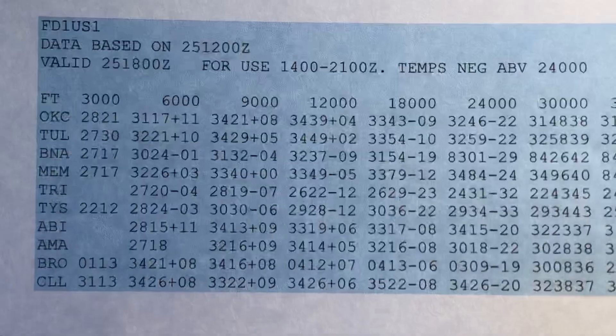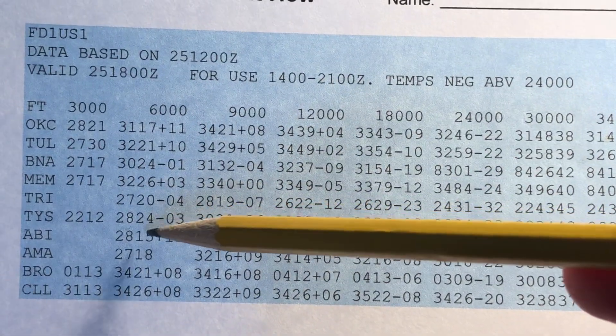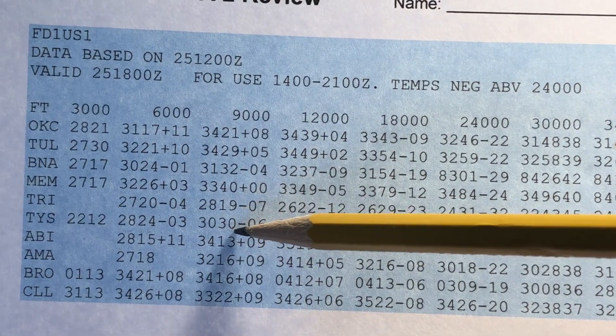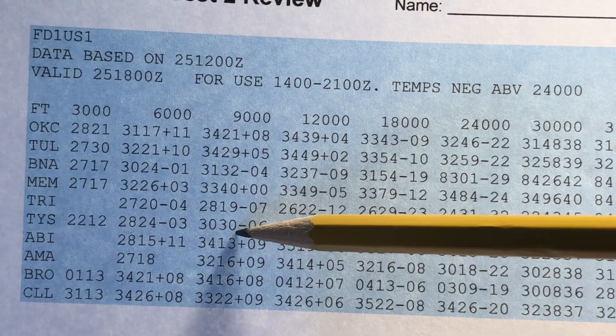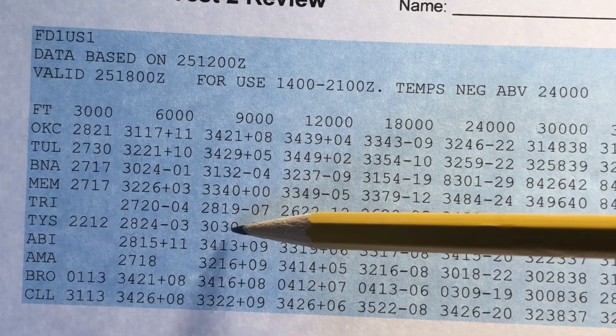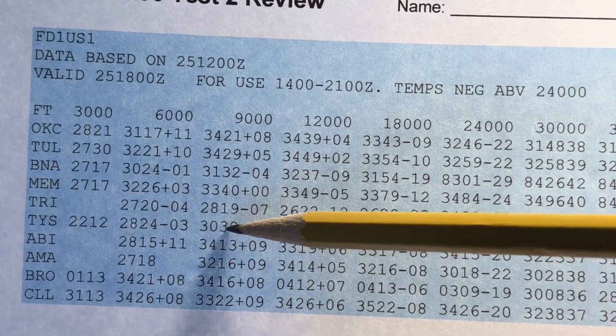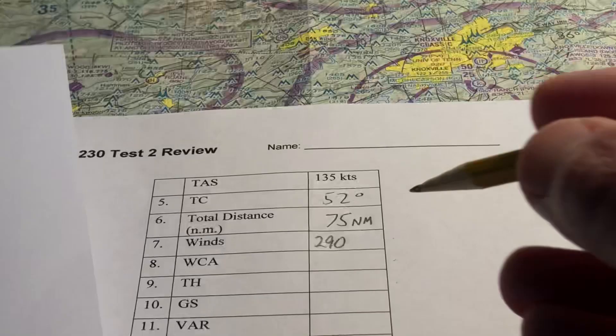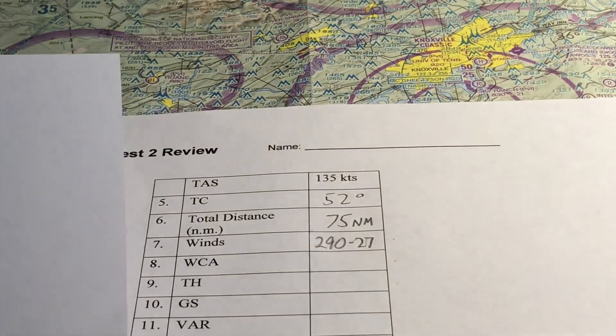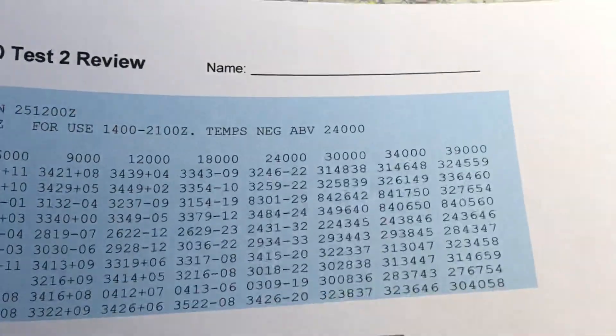Now let's look at the wind speed. At TYS, at 6,000, the wind speed is forecast to be 24 knots. At 9,000, it's forecast to be 30 knots. So that's a six knot difference. So halfway between is going to be 27 knots. So the wind direction is 290 wind speed 27 knots. So we'll write that down. All right, so now we have our winds for our trip.